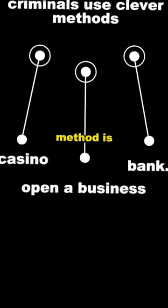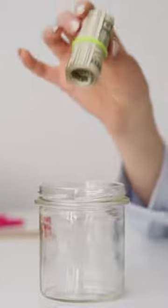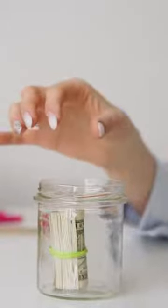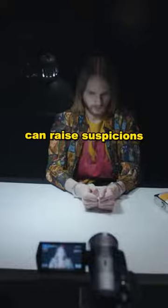Another method is to open a business, such as a pizzeria, and put the dirty money into the daily cash register to make it clean. However, having a large amount of money in a small business can raise suspicions.